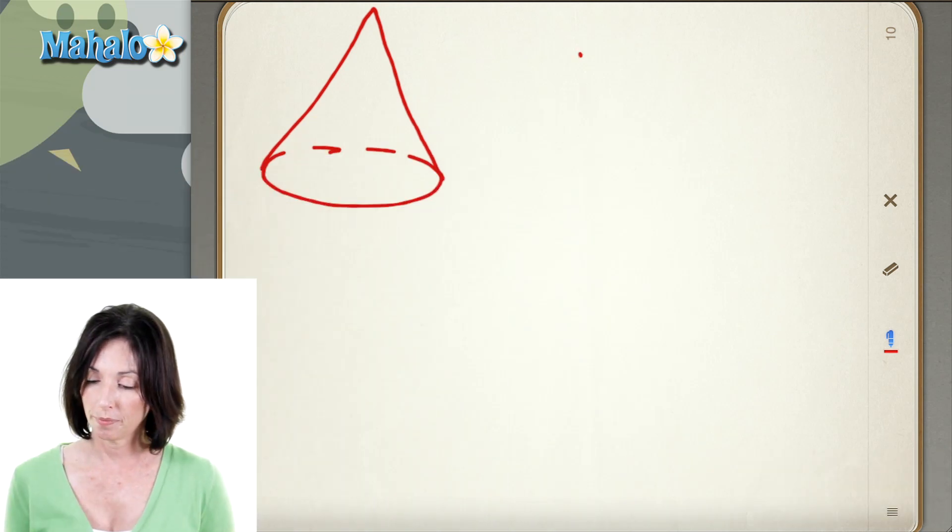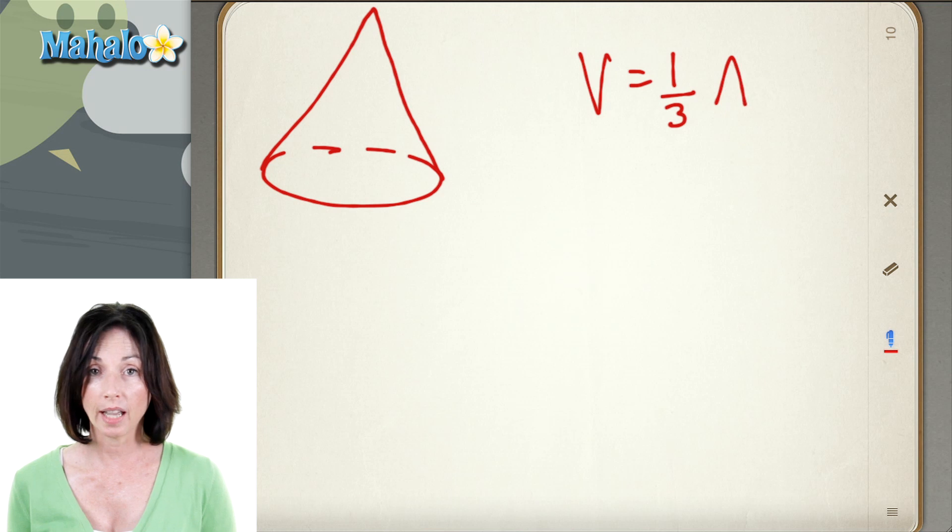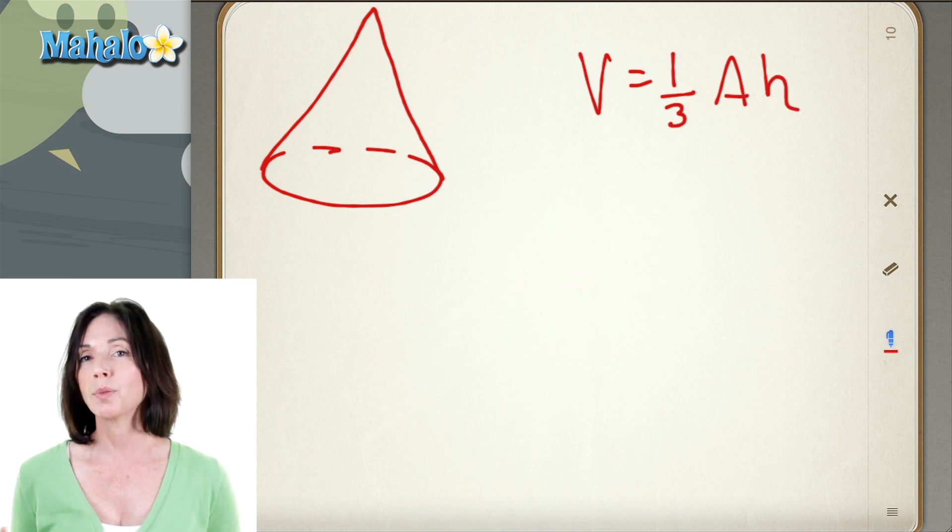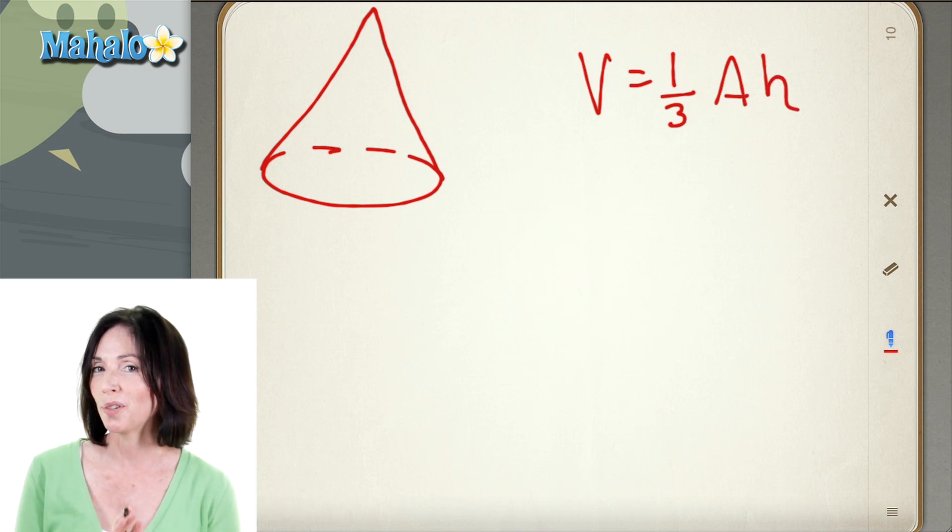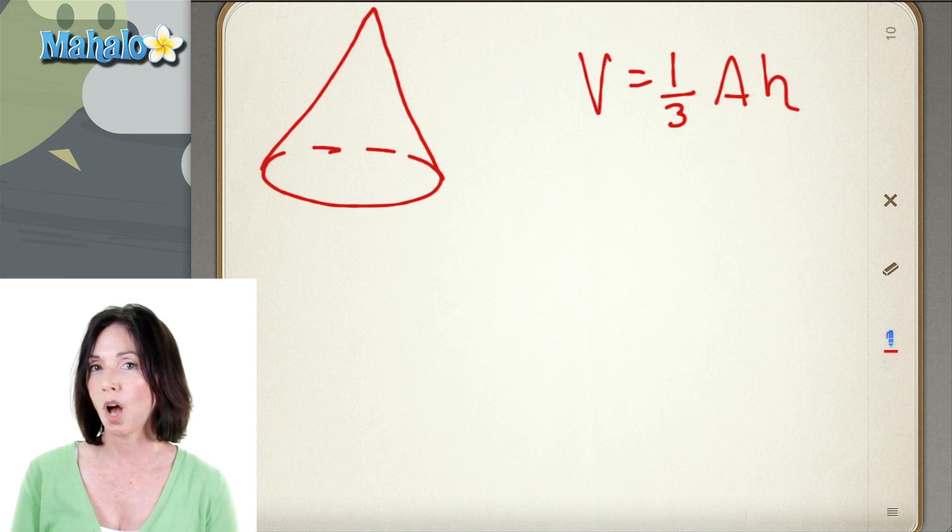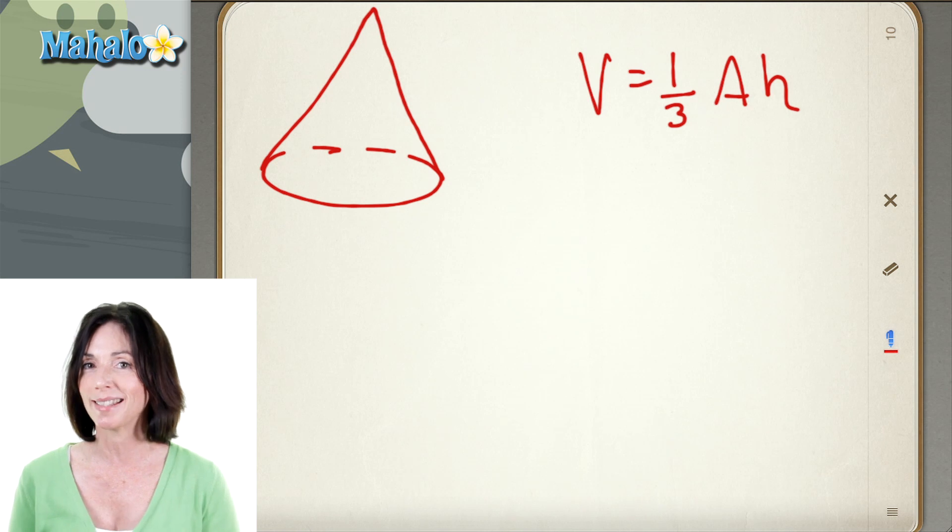So this is the formula. The volume is equal to one-third the area of the base multiplied by the height. Now it's really important that you remember that one-third goes in there when you're finding the volume of a cone, because the formula looks very much like the volume of a cylinder, but that one-third is the thing that makes the difference.